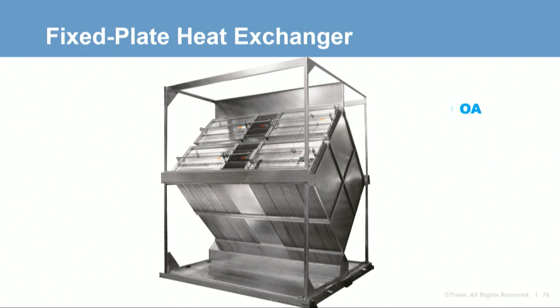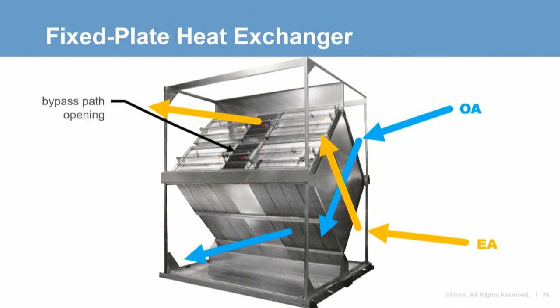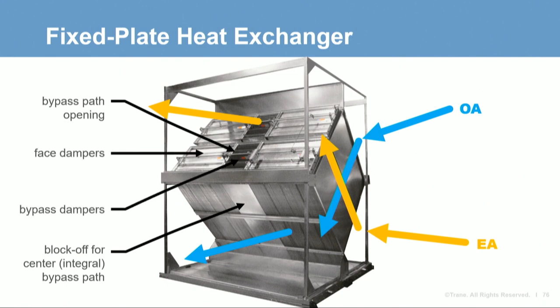Here's a photo of a plate exchanger where airflows are cross-flow, with outdoor air entering the top back side and passing down through the heat exchanger, while exhaust air enters the bottom back side and travels at an upward angle. Plate exchangers can be constructed with a bypass path through the middle of the heat exchanger. With bypass dampers open and face dampers shut, all the exhaust air passes through this open section in the center — so no heat is transferred.